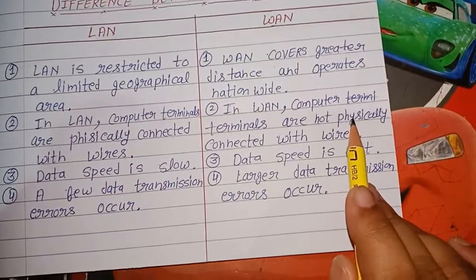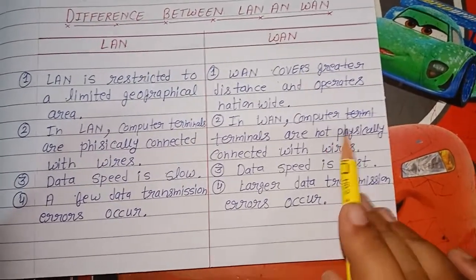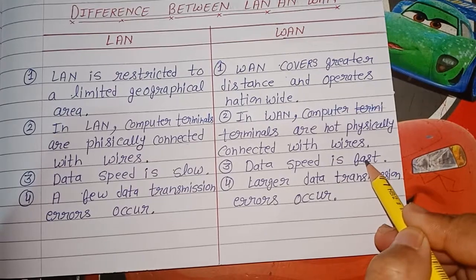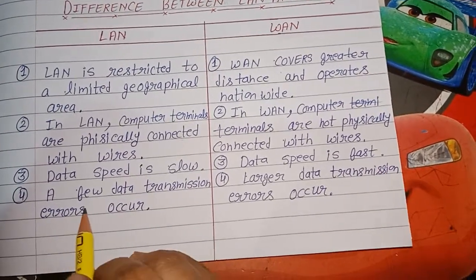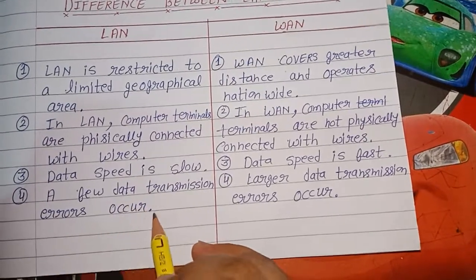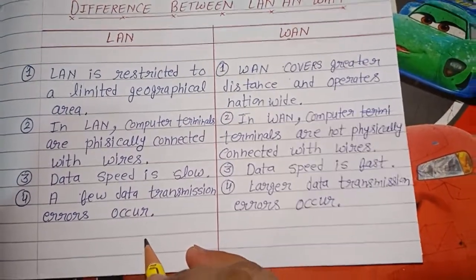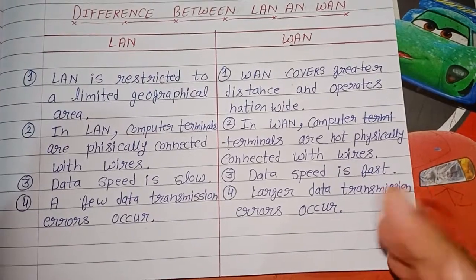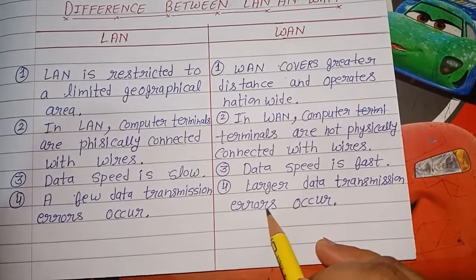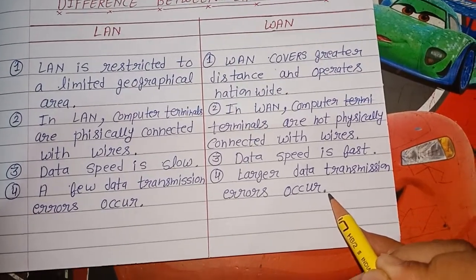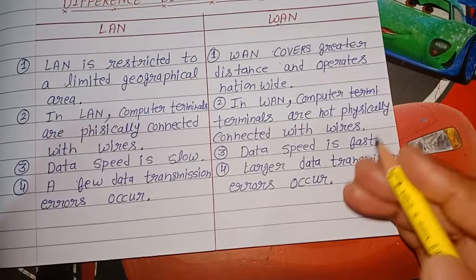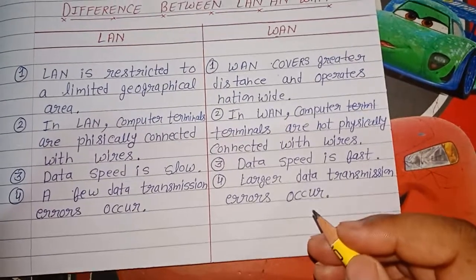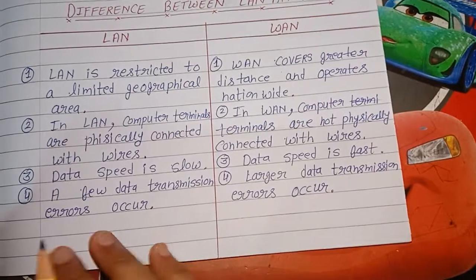यहां पर हमने देखा था: WAN में telecommunication और satellite signals के through connect होंगे. Then, data speed: LAN में slow होती है और WAN में fast होती है. In LAN, few data transmission errors occur — क्योंकि slow data transmission होता है, तो data धीरे-धीरे send होता है, तो error कम होती है. In WAN, larger data transmission errors occur — क्योंकि एक साथ lot में information send होती है, चारों तरफ से, तो उसमें error होने की chances ज्यादा होंगे, as compared to LAN.